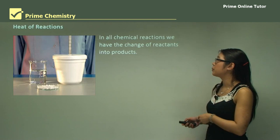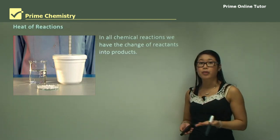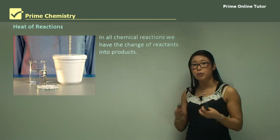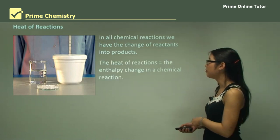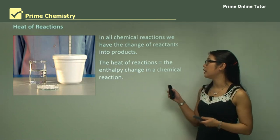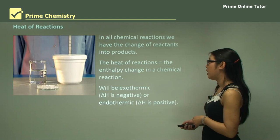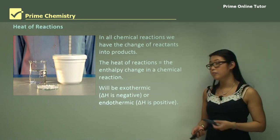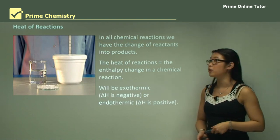In all chemical reactions we have the change of reactants into products — we break bonds and form bonds to make new things. The enthalpy change in a chemical reaction is the heat of reaction, and this will be exothermic if the delta H is negative, or endothermic if the delta H is positive.